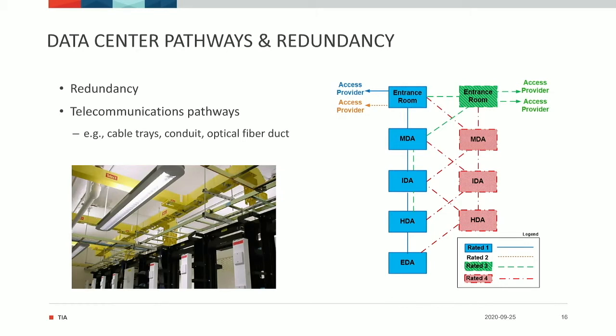You can see an example on the right-hand side of the type of redundancy that you might require. For a rated 2 data center, I would have a redundant entrance room. For a rated 3 data center, I would have redundant pathways, but only one of each of the horizontal distribution area or the main distribution area. The two routes would be redundant. For a rated 4 data center, each of the server cabinets — which we call EDAs or equipment distribution areas — would be connected to two horizontal distribution areas or HDAs, separated from each other, with diverse routing all the way to diverse MDAs.